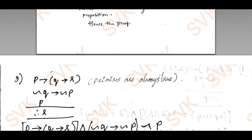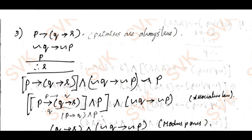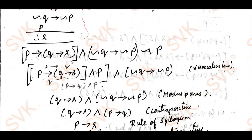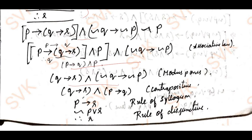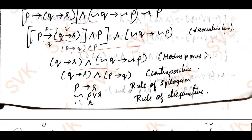Going with the next problem — p implies q implies r — this is the given argument and I need to verify it is valid using laws of logic. Using the connective conjunction and then by associative law I change the bracket. After changing the bracket, by modus ponens, then by contrapositive, and finally by the rule of syllogism and disjunctive rule, I am going to get the required answer as r, and the given argument is valid.